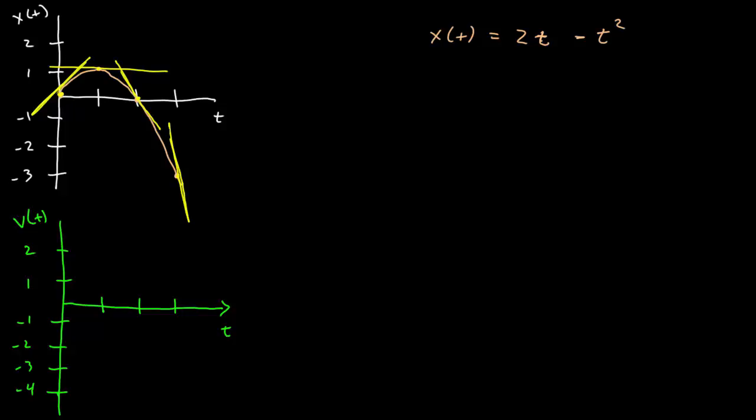This is telling me that my velocity, which is a function that's telling me the slopes of these tangent lines, is going to be changing as a function of time as well. Well, I can go ahead and calculate that because the velocity is the time derivative of the position function, which is 2 minus 2t.